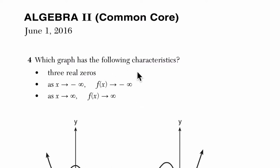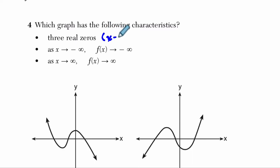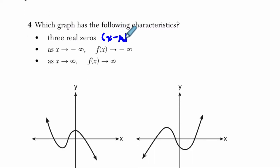Now, here they're saying which graph has the following characteristics. So these are the characteristics. The first one says that there are three real zeros, which is a way of saying it has three x-intercepts. A zero is when the output is zero, when the height is zero. It's an x-intercept.